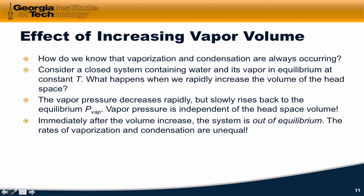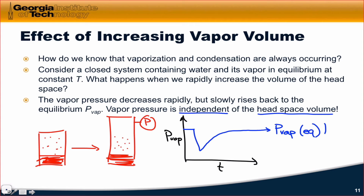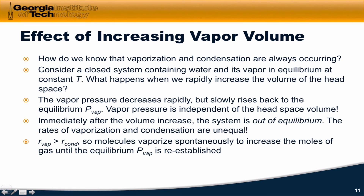Immediately after the volume increase, the system is out of equilibrium. You'll see figures like this quite often, where a rapid change is indicated by a big spike up or down in the value of some state function. This non-equilibrium state causes spontaneous macroscopic processes to happen. At this point, the rate of vaporization is not equal to the rate of condensation. In fact, since we increased the volume, the rate of vaporization becomes much greater than the rate of condensation, so molecules vaporize spontaneously to increase the moles of gas until the equilibrium vapor pressure is reestablished.